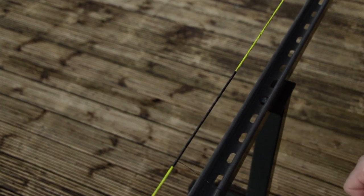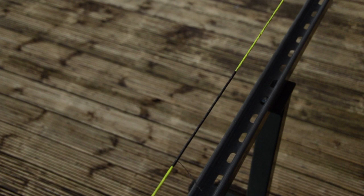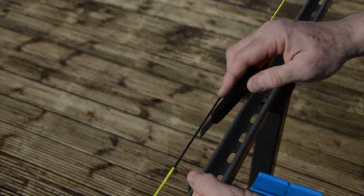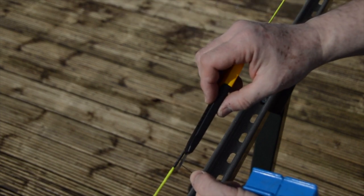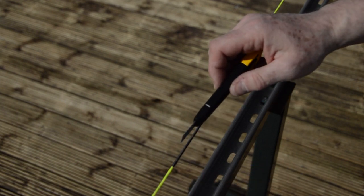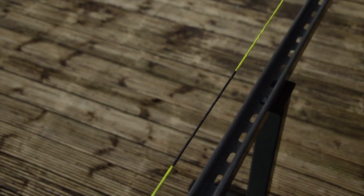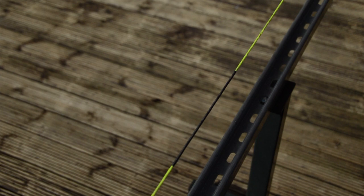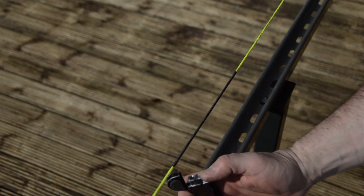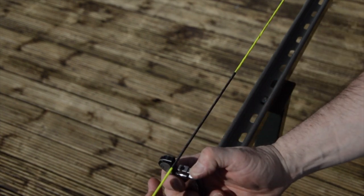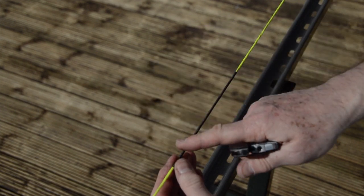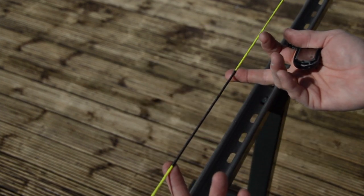The next thing we need to do is get rid of this tail end. So again, sharp knife—I'm just gonna cut that short. And with my lighter, just very carefully burn that in. And there's our center serving done.